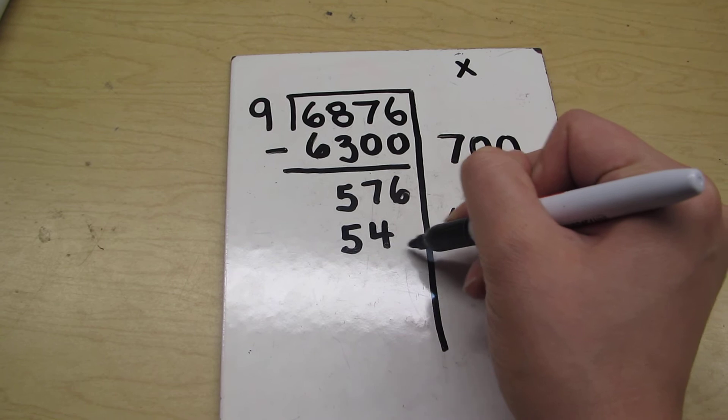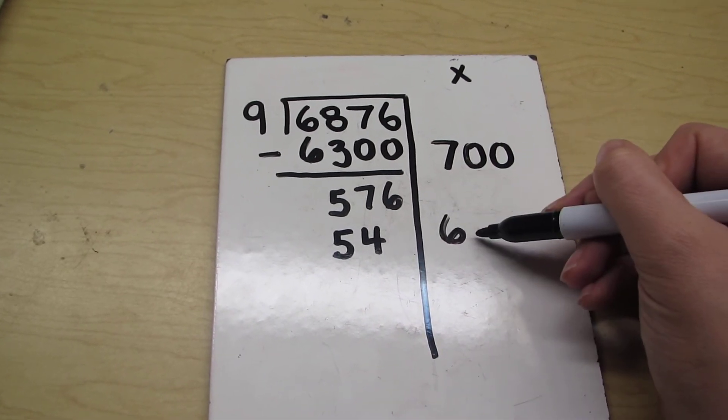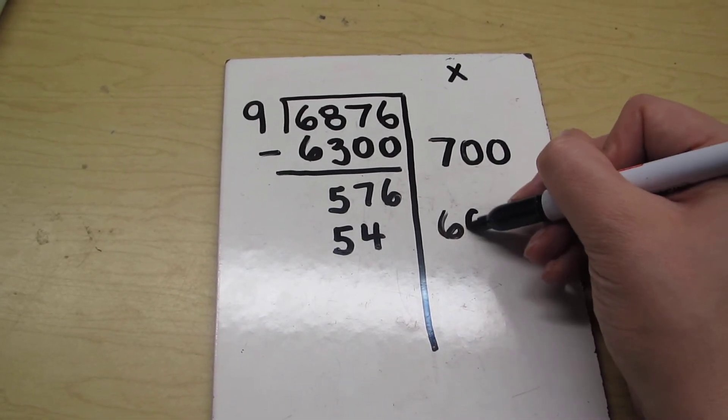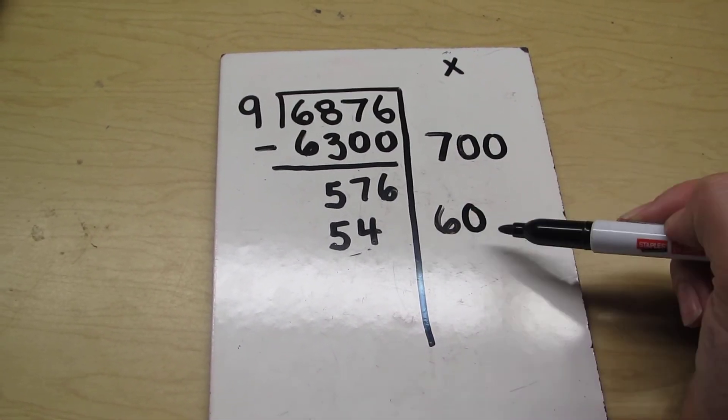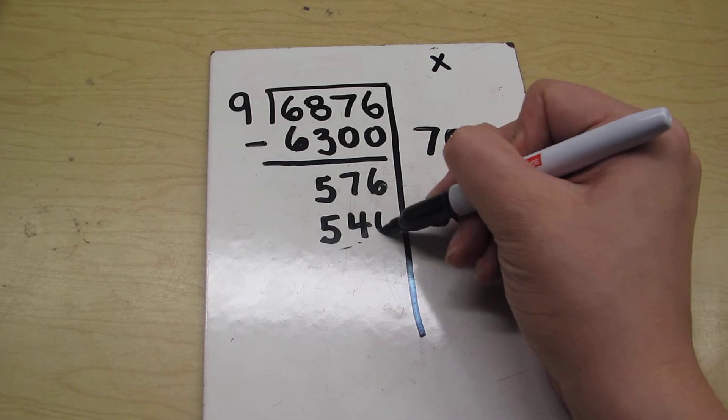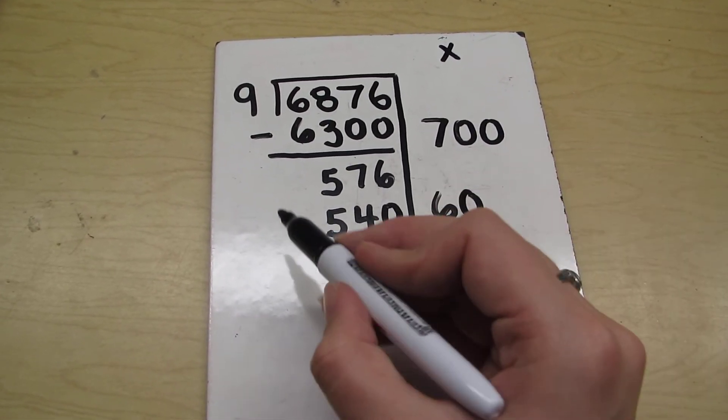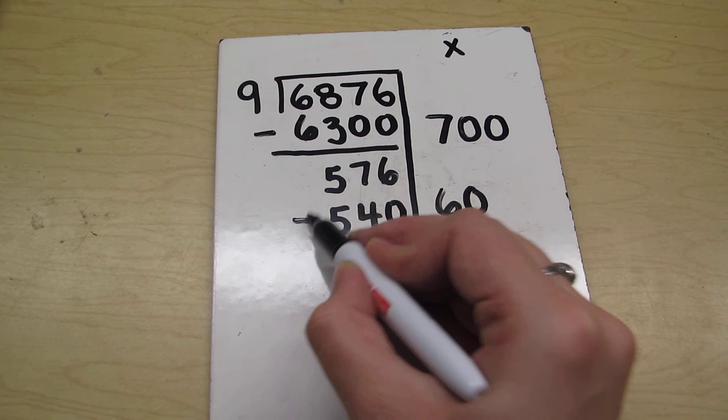Oh, I need another place value there. My 1's are missing, so 6 isn't enough. I need to put 60. 9 times 6 is 54, plus the 0 at the end. There we go. So now I'm ready for my subtraction.